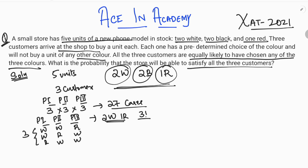This can be found using permutation: 3! divided by 2! equals 3, since we have three items with two identical ones. The full list of satisfiable combinations is: two white and one red, two black and one red, two white and one black, and two black and one white.